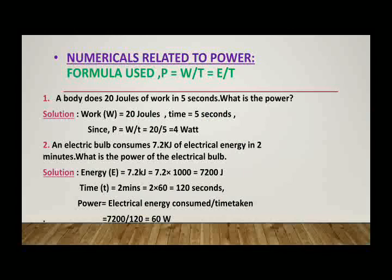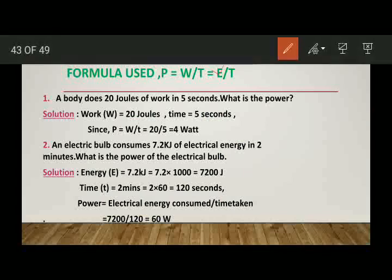Now let us perform some numericals related to power. We will use the formula P equals W by T, or E by T since energy and work done are the same. First numerical: a body does 20 joules of work in 5 seconds. Work done is 20 joules and time is 5 seconds. Using the formula power equals work done divided by time taken, we put the values in the formula and find the answer as 4 watt.